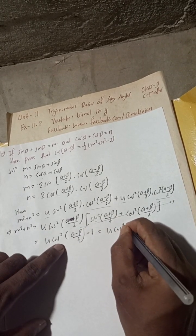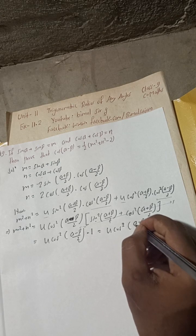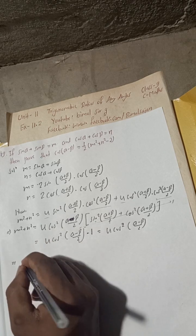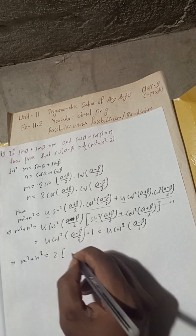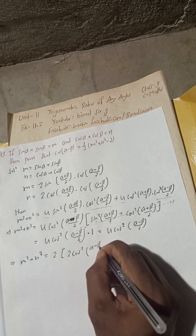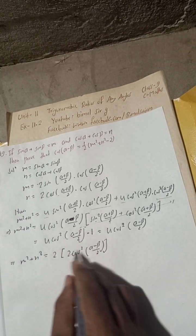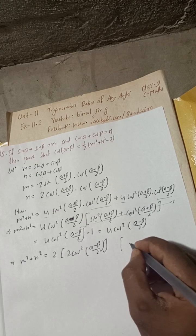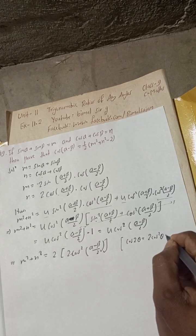Now, remember one formula: cos 2θ equals 2 cos squared θ minus 1. This means 1 plus cos 2θ equals 2 cos squared θ, or equivalently cos 2θ equals 2 cos squared θ minus 1. We can write M squared plus N squared equals 4 cos squared((α minus β)/2). Now take the 2 inside using this formula.